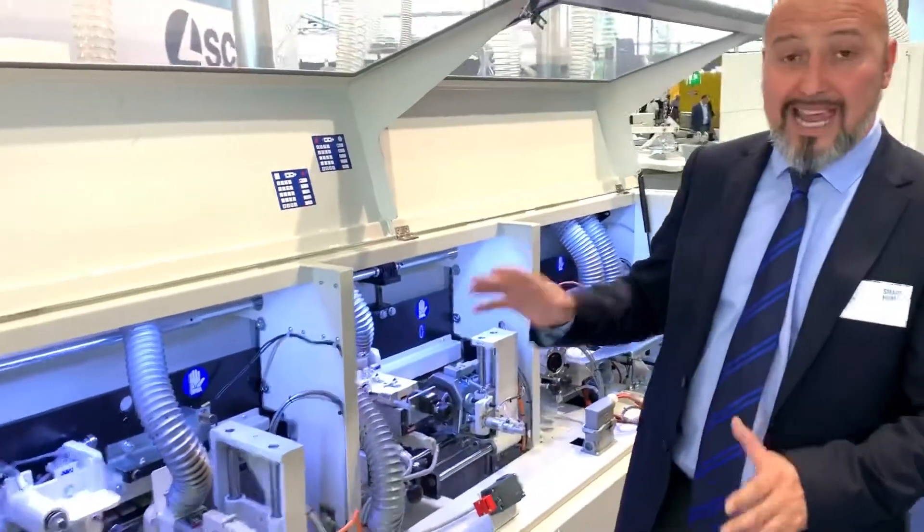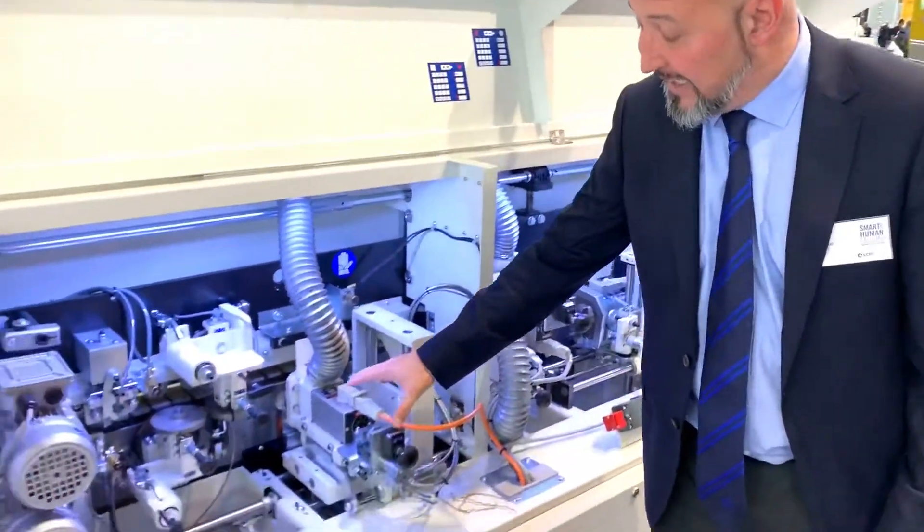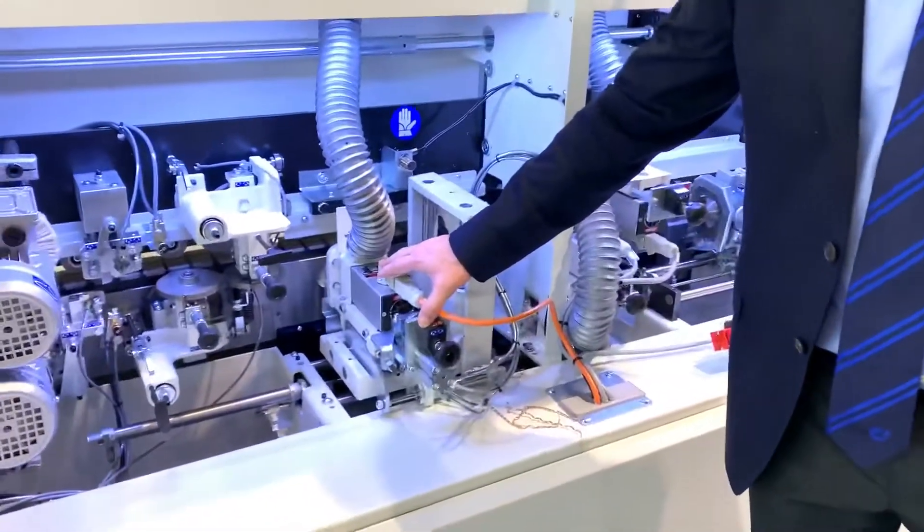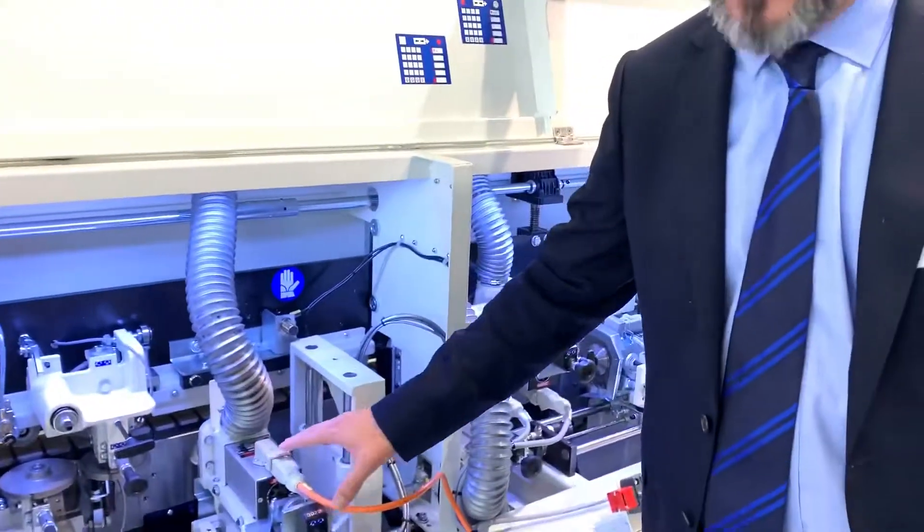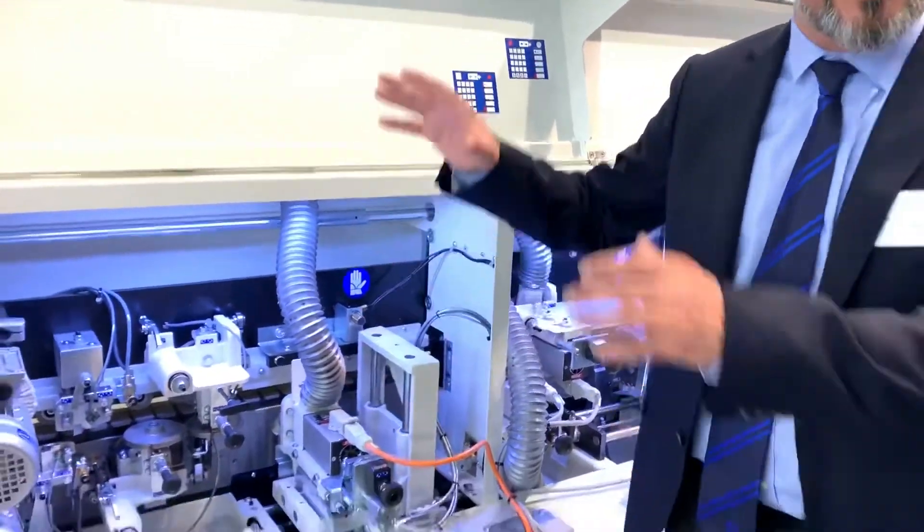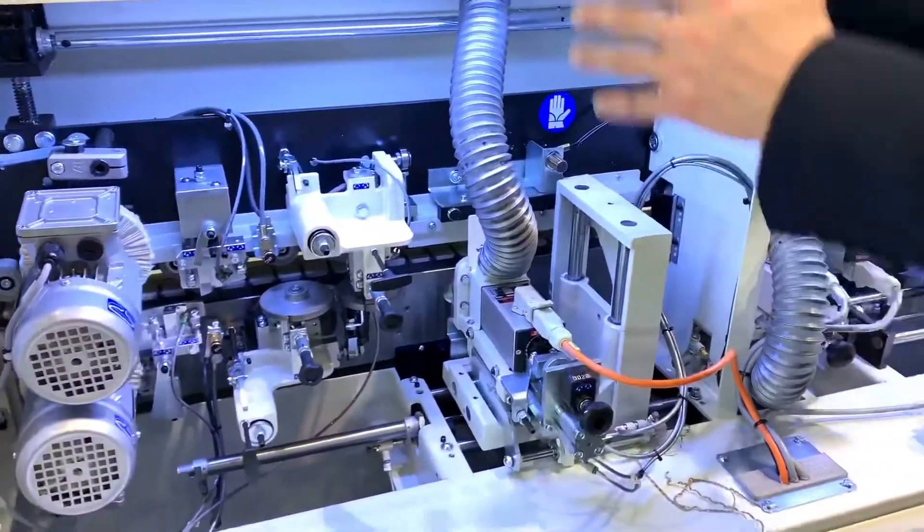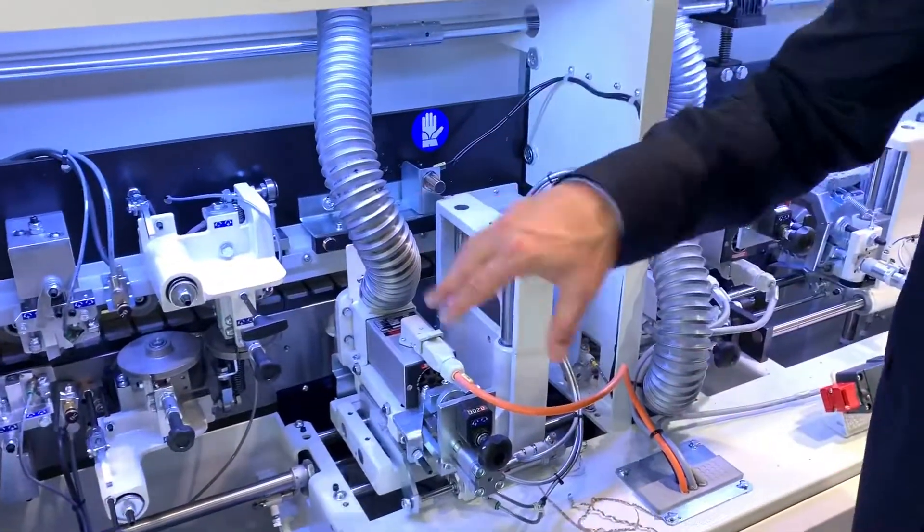On this machine, the ME40, we have an independent corner-rounding unit that is completely different. It's the same as the S-LV5, but dedicated only for corner-rounding.